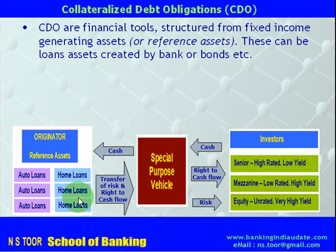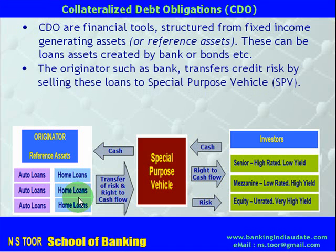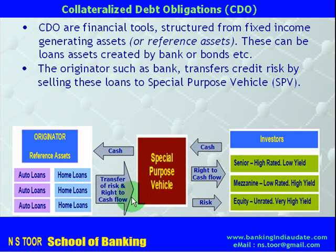In the process of how CDOs are created, the originator — such as a bank — transfers these assets to a special purpose vehicle. The credit risk goes to the special purpose vehicle, along with the right to cash inflows. The auto loans or home loans are removed from the balance sheet of the originator and go to the balance sheet of the special purpose vehicle.